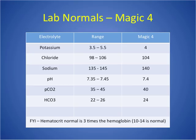A great memory trick called 'the magic four' helps you memorize lab normals by the middle number rather than a range. It covers potassium, chloride, sodium, pH, pCO2 from a blood gas, and bicarb from a blood gas — all learned in groups of four. Another hint: the hematocrit normal is three times the hemoglobin, so if you memorize hemoglobin, you know hematocrit.